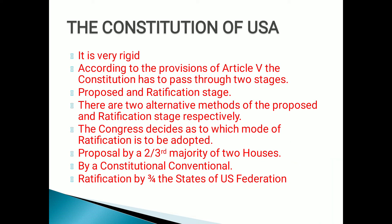Now, what is the constitution of USA? The US constitution is a very rigid constitution. Article 5 of the US constitution lays down a difficult method of amendment. It reads: the Congress, whenever by two-thirds of both houses shall deem it necessary, shall propose amendments to this constitution. Always remember, the very first initiative is taken by Congress. Or on the application of the legislatures of two-thirds of the several states, shall call a convention for proposing amendments.